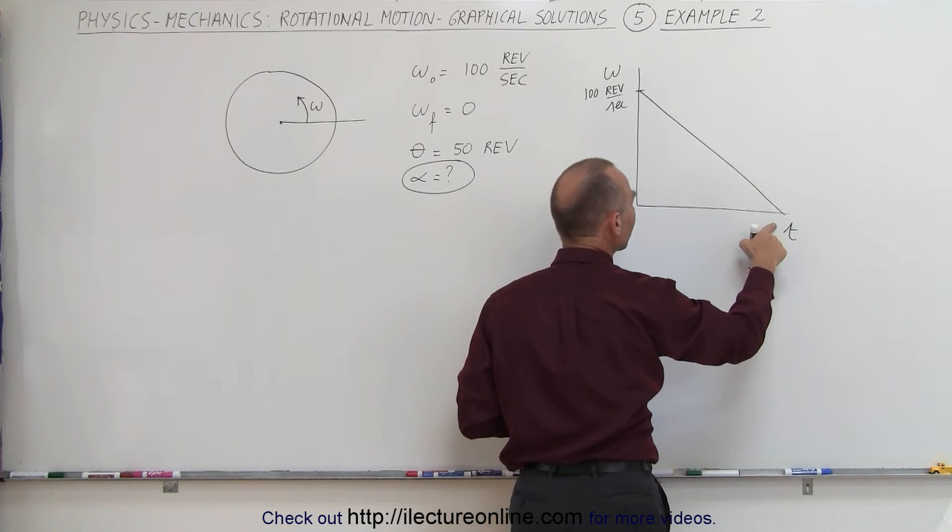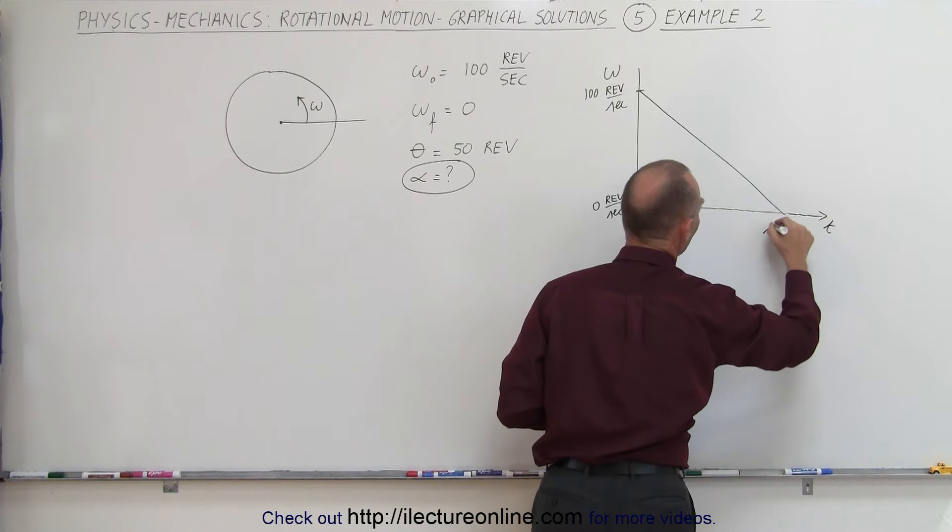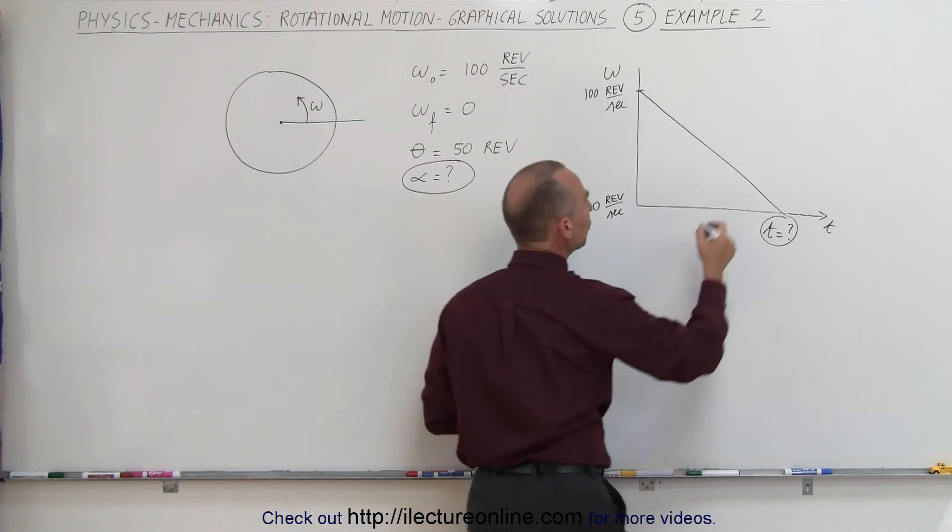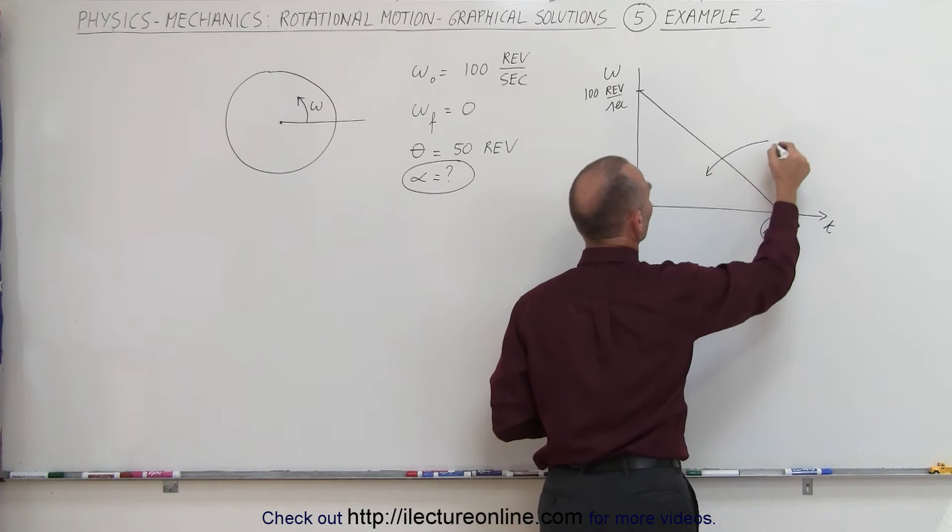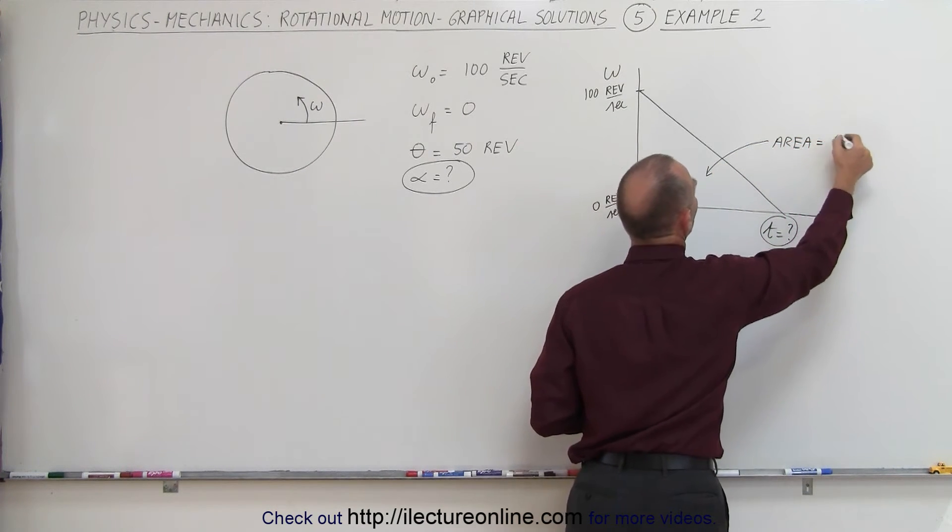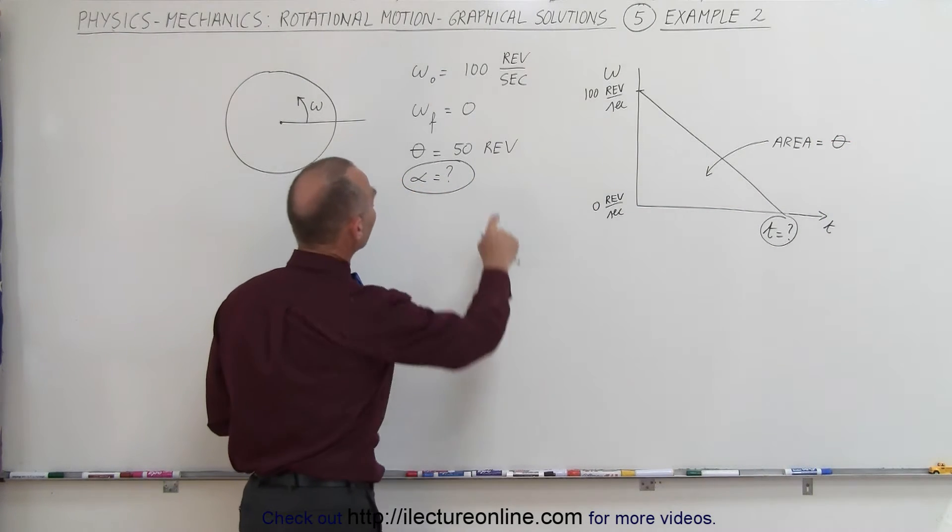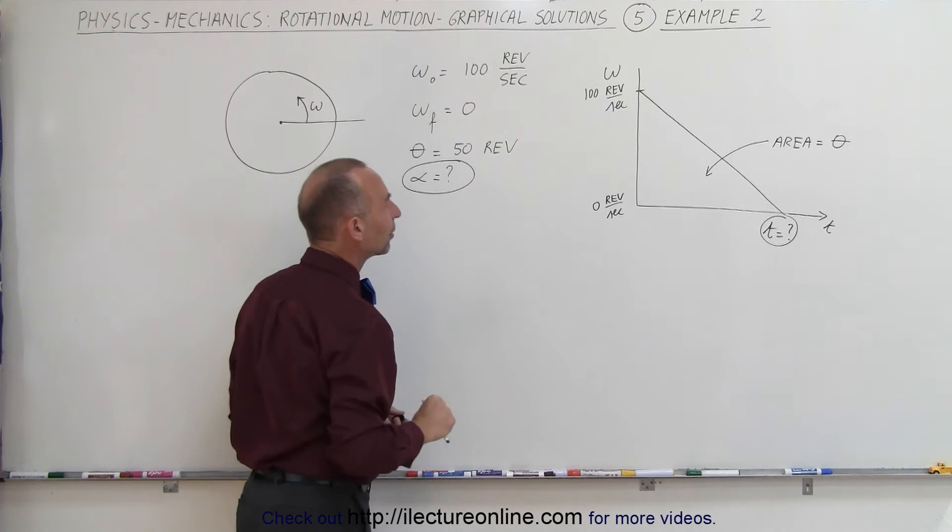We're not given the time. So time equals question mark, we don't know what that is. But we do know that the area underneath the curve, the area equals theta, meaning the angular distance traveled, and that was given. So they gave us the value for the area.